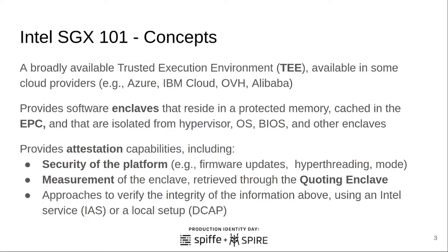That feature is the capability of attesting the code. In the attestation process, it includes not only the measurement of the code that was loaded and some other things that were used to create this enclave, but also includes information from the platform — for example, the firmware version that was used, if hyper-threading was enabled, if it is a debug mode or production mode enclave. Once you have this measurement of the application and the information on the platform security, this is packed in something that we call the quote.